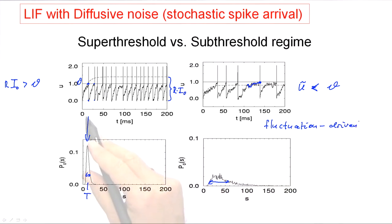We call this the fluctuation-driven regime. On this side here, it's driven by the mean input. The mean input alone would make the neuron fire. Interestingly, if we zoom in on this subthreshold regime, it looks very similar to the in vivo data of subthreshold membrane potential fluctuations.